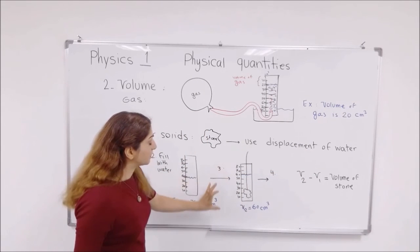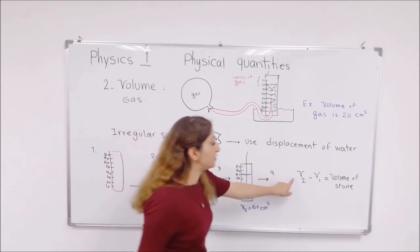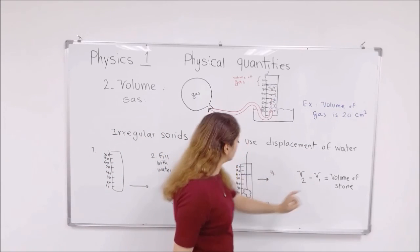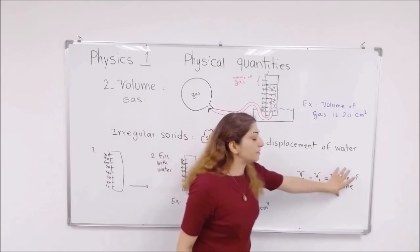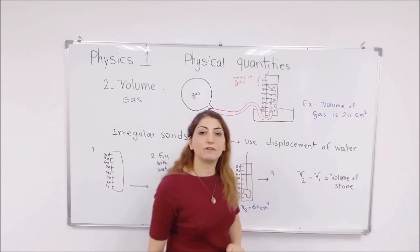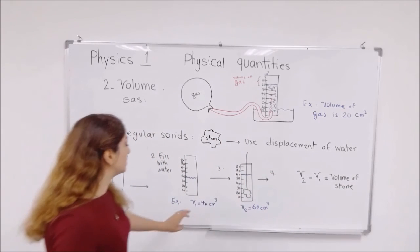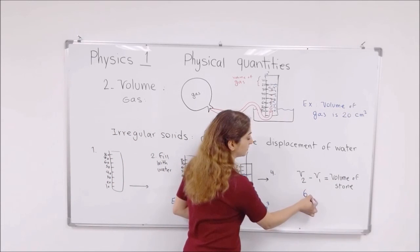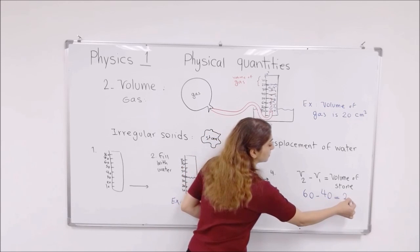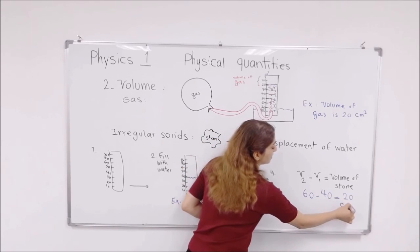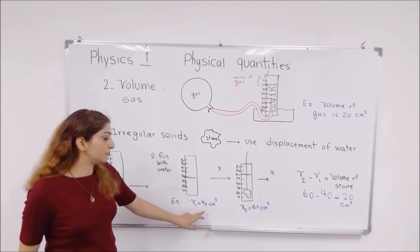It's by using this formula. The second reading we have here, V2 minus the volume of the water at the beginning of the experiment. Whatever you gain here would be the volume of the stone. For example, here, the volume would be 60 minus 40, it equals to 20 centimeter cube. So the volume of the stone here would be 20.